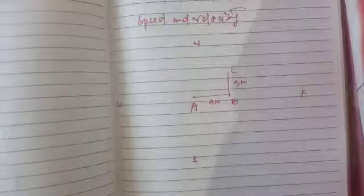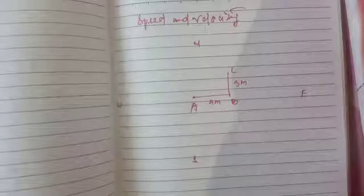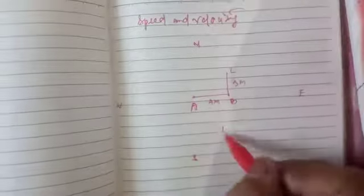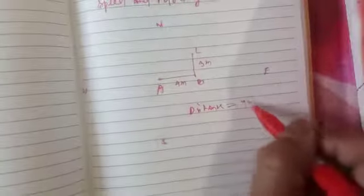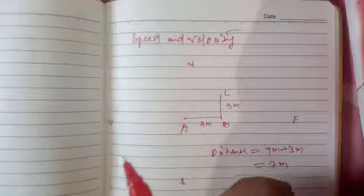Now the question arising is: what is the distance covered by the object? We know that distance is the total path length covered by the object, without direction. Here the object covers first A to B and then B to C, which is 4 meters plus 3 meters, equal to 7 meters. So distance equals 4 meters plus 3 meters, equal to 7 meters.